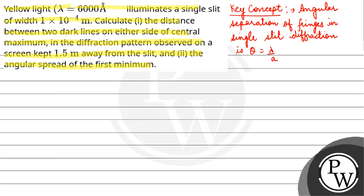According to the question, the wavelength given is 6000 angstrom, the width of the slit is 1×10⁻⁴ meter, and the screen is kept at a distance of 1.5 meter.